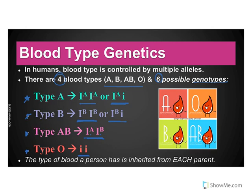The important thing to remember is that you will never, ever, ever separate these superscripts from the I's. When you are doing the Punnett squares, you're doing it in terms of the I's, and the letters stay attached to the I's.